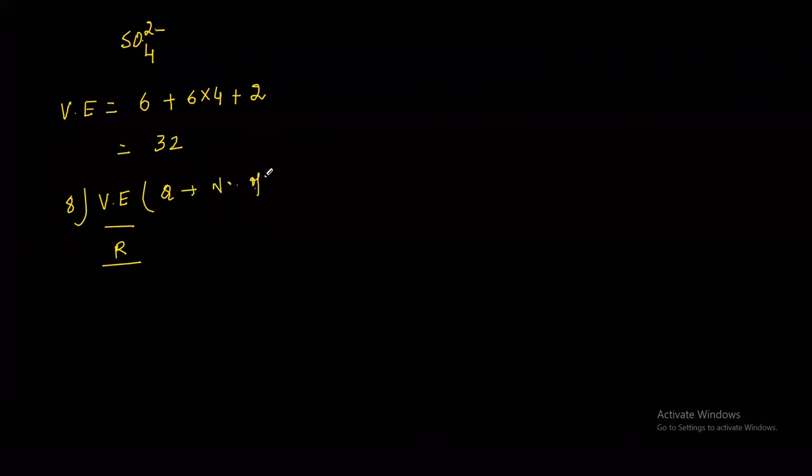The quotient is the number of bond pairs. The remainder is the number of electrons in the lone pair. Number of lone pairs equals R divided by 2. We calculate steric number, which equals number of bond pairs (Q) plus number of lone pairs (R/2).